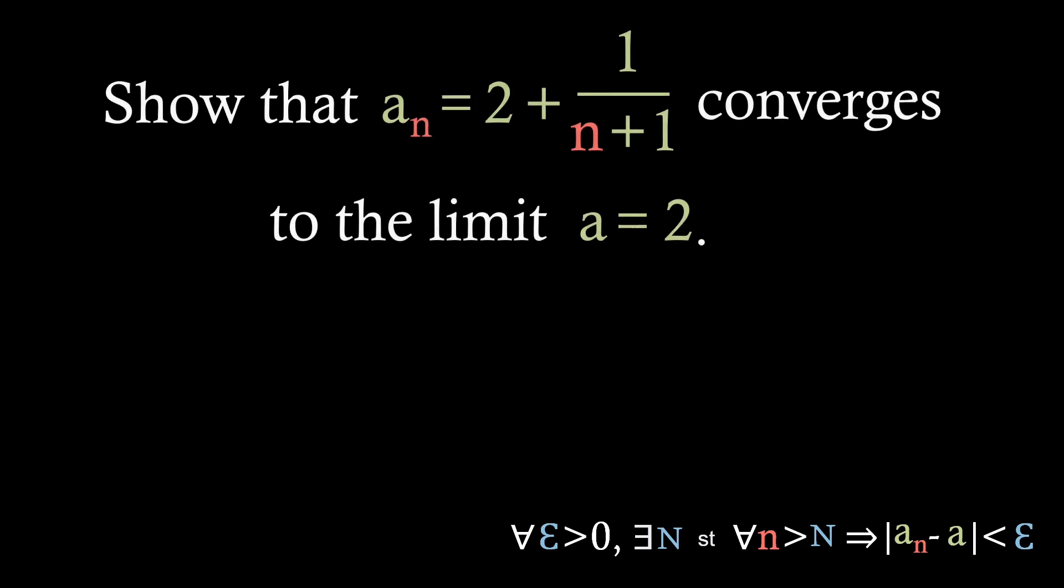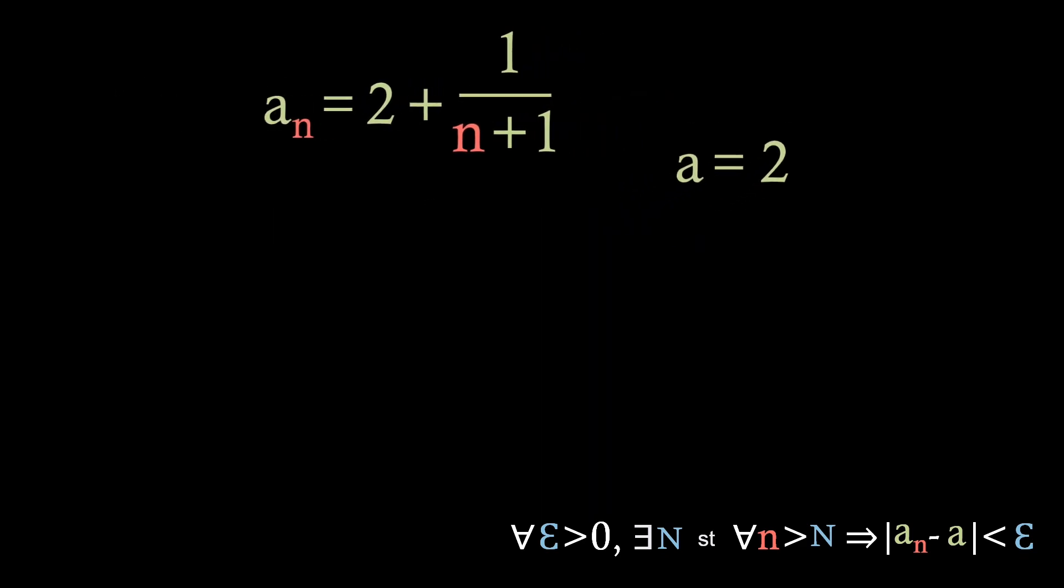Now that we've established the definition, let's have a look at a relatively simple example to help further our understanding. So the question we have is that we need to show that the sequence a_n equals 2 plus 1 over n plus 1 converges to a limit a equals 2. So the first thing we're going to do is pull out the key information, so that is the actual sequence itself, so the 2 plus 1 over n plus 1, and what the limit is, which is the a equals 2.